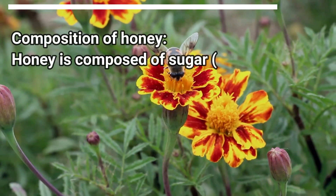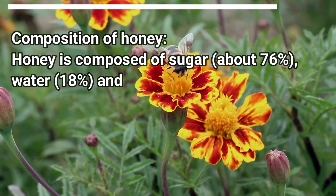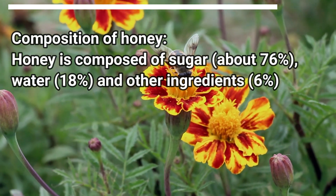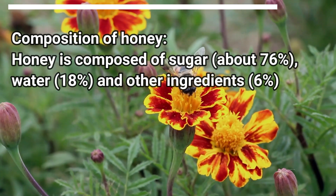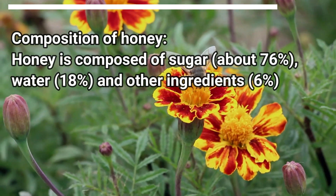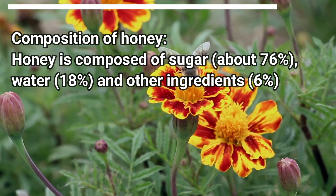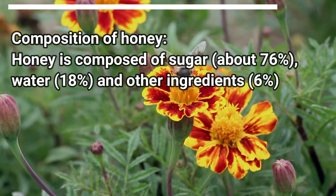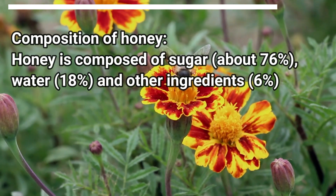Composition of honey: honey is composed of sugar, about 76%, water, 18%, and other ingredients, 6%.